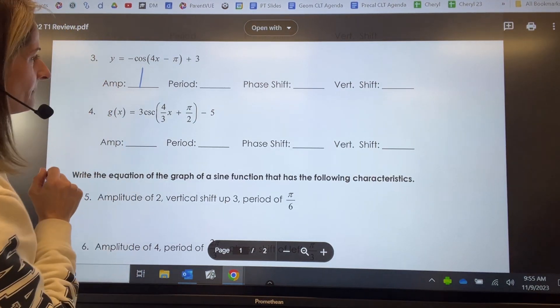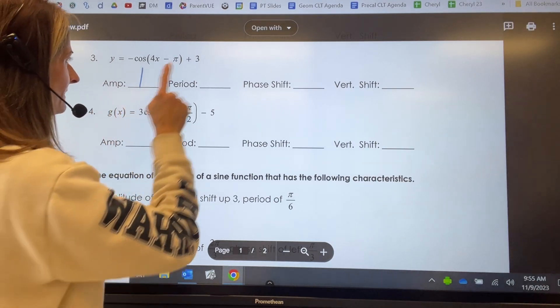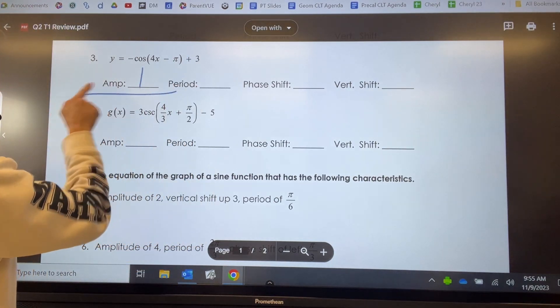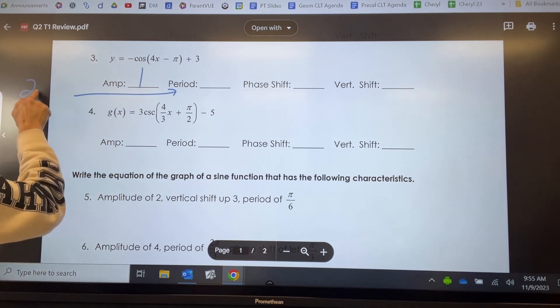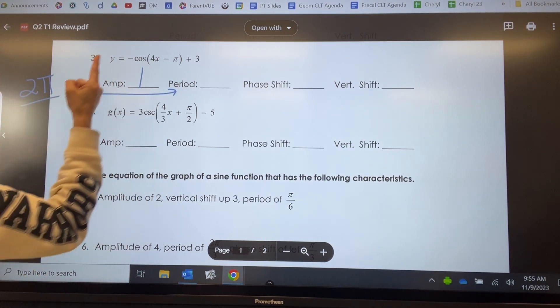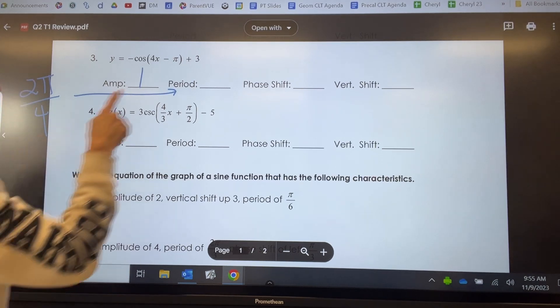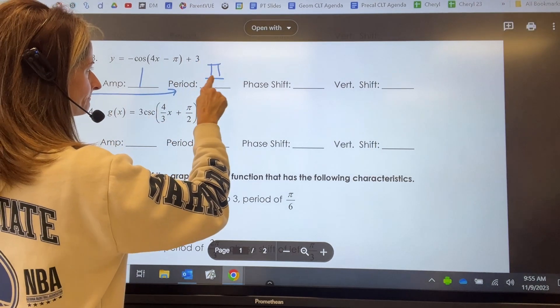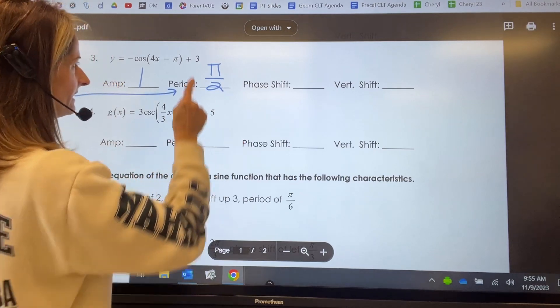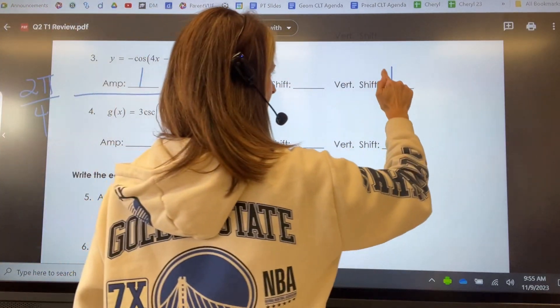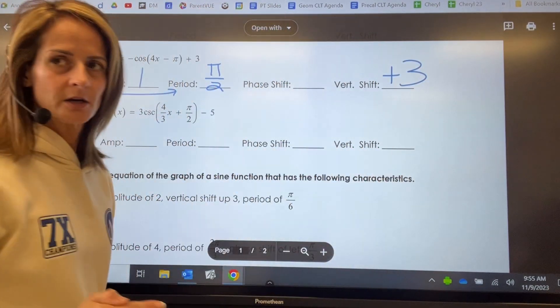The period of the parent function is 2 pi divided by B. So over here, 2 pi divided by, in this case, B is four. So that's going to be pi over two is our period. We'll get the phase shift in a minute. I can tell a vertical shift is going to be up three.